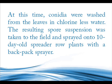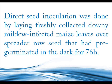At this time, conidia were washed from the leaves in chlorine-free water. The resulting spore suspension was taken to the field and sprayed onto 10-day-old spreader row plants with a backpack sprayer. Direct seed inoculation was done by laying freshly collected downy mildew-infected maize leaves over spreader row seed that had pre-germinated in the dark for 76 hours.